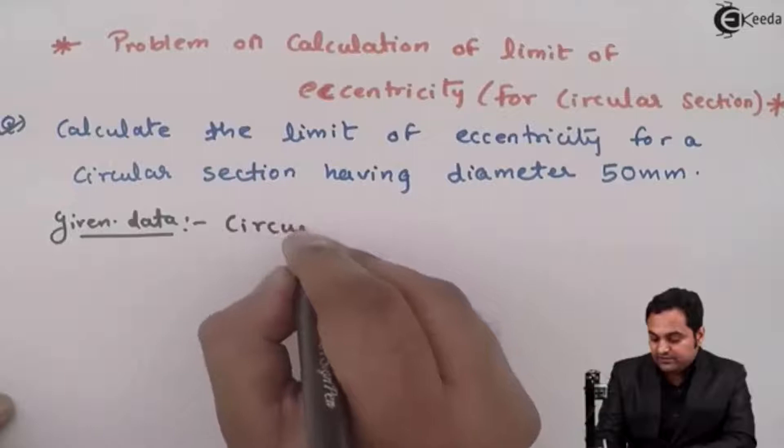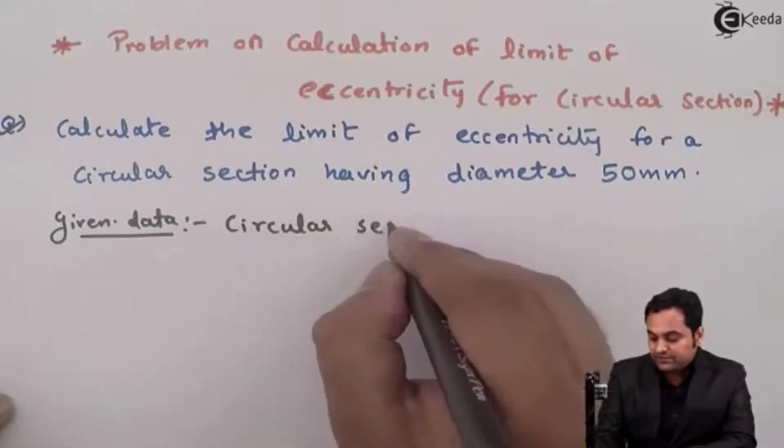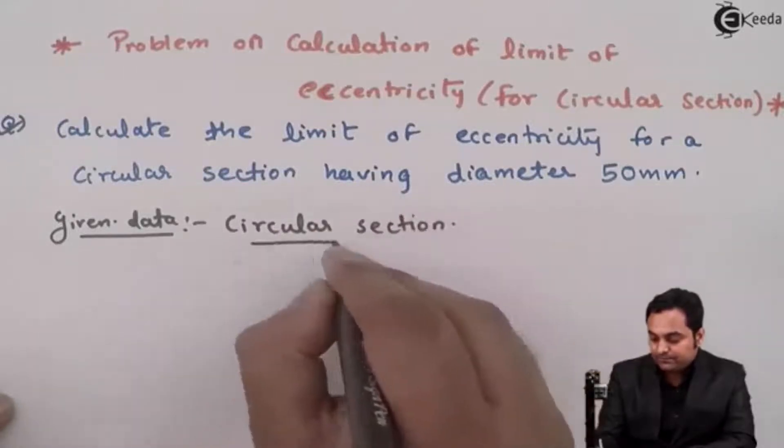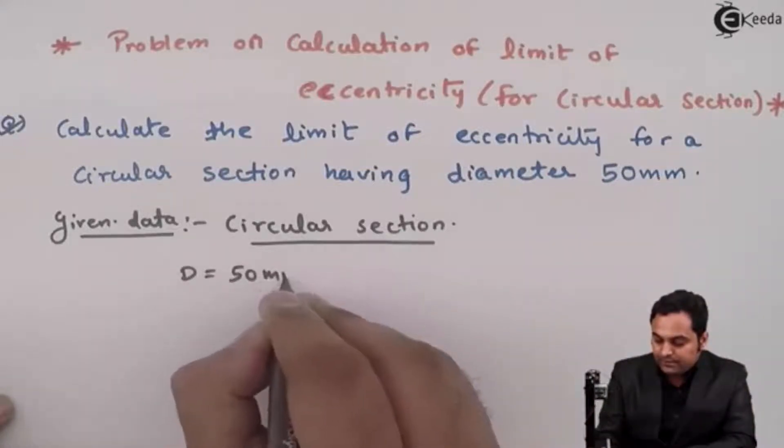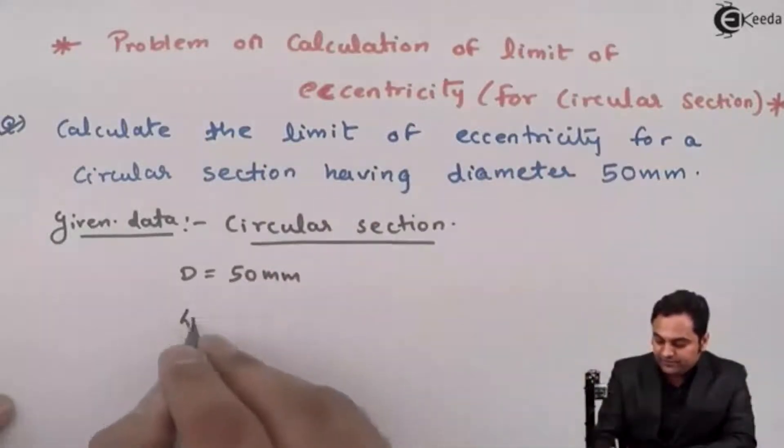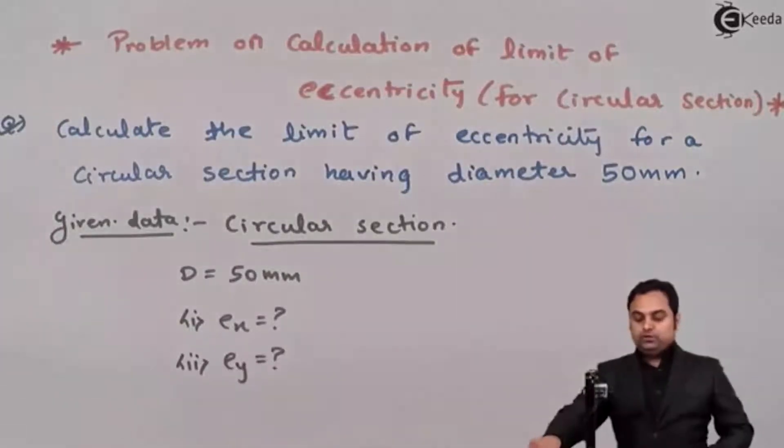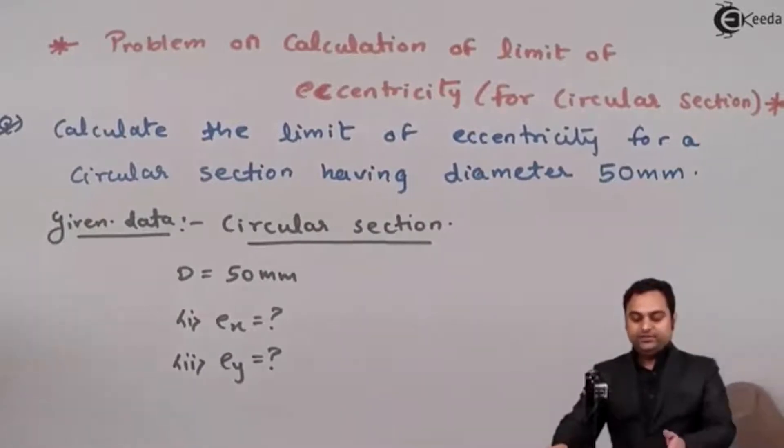So first it is given that the section is circular diameter 50 mm and we have to find limit of eccentricity that is EX and EY. So now with the data available let us try to get the solution to this problem.